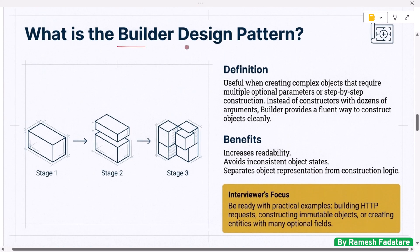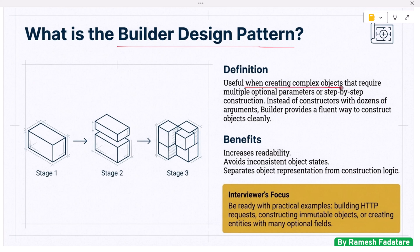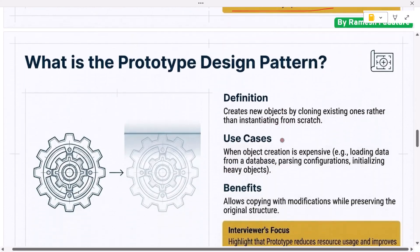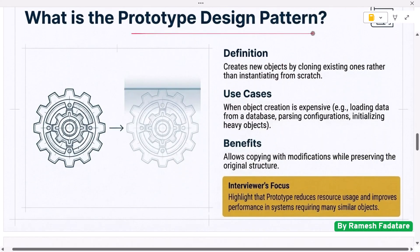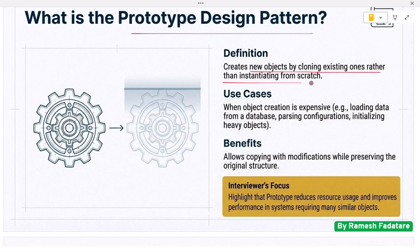Next: what is the builder design pattern and when should it be used? The builder pattern is useful when creating complex objects that require multiple optional parameters or step-by-step construction. Instead of writing constructors with dozens of arguments, builder provides a fluent way to construct objects cleanly. It increases readability, avoids inconsistent object states, and separates object representation from construction logic. Interviewers may ask for practical examples such as building HTTP requests, constructing immutable objects, or creating entities with many optional fields.